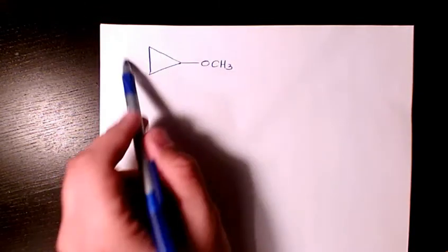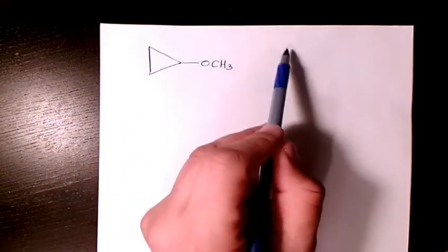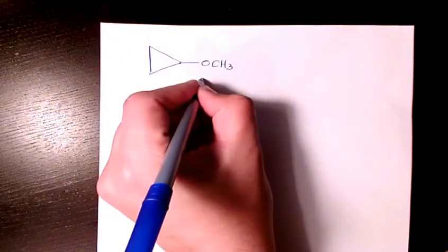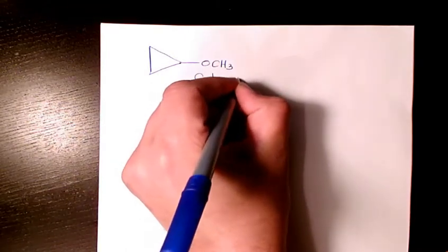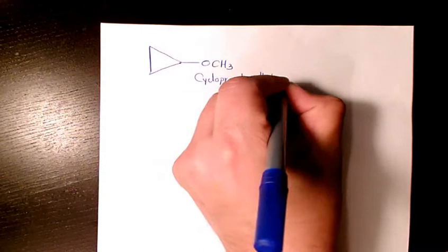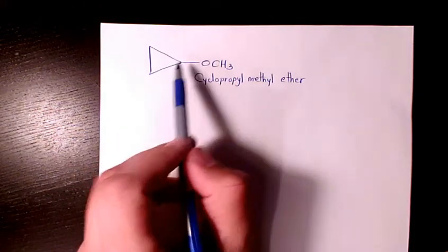We have two alkyl groups. One of them is cyclopropane and here we have a methyl group, so cyclopropyl and methyl. The common name for this guy is going to be cyclopropyl methyl ether.